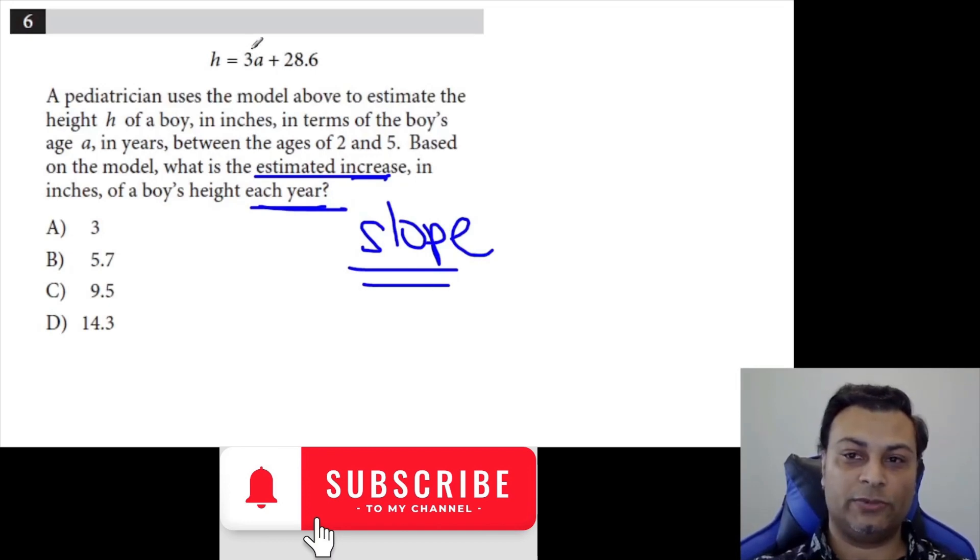And the slope here is 3. If you think of this as y equals mx plus b, the coefficient of the input, that's your slope. This is the slope. So 3 is our slope, and the answer is 3.